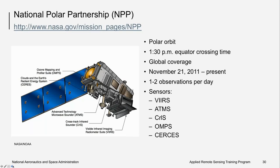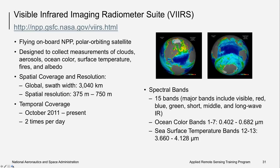Another satellite is the National Polar-orbiting Partnership, also known as the Suomi NPP, launched in 2011 with global coverage and a near-daily revisit rate. The VIIRS sensor on this satellite is used for ocean color remote sensing. The Visible Infrared Imaging Radiometer Suite is designed to collect measurements of ocean color, clouds, aerosols, surface temperature, fires, and albedo. Between the MODIS and VIIRS sensors, we've got the ocean covered.